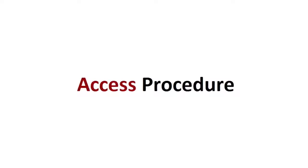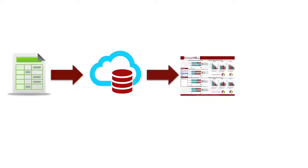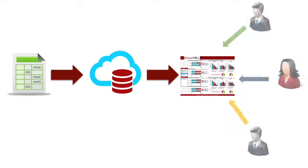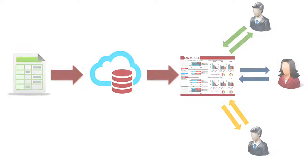Now how does it work? Simply, survey data is stored in a secure cloud database. Then our Dynamic Dashboard application extracts and aggregates this data. Each user of this application is assigned unique login information which filters the data shown in the dashboard so that they can only see the data from their respective organization, thereby ensuring privacy of other organizations' data.